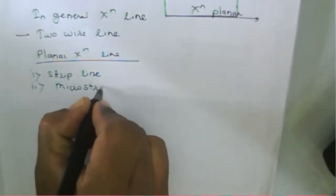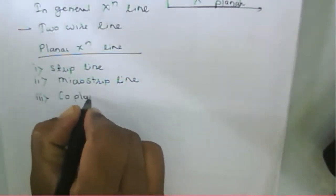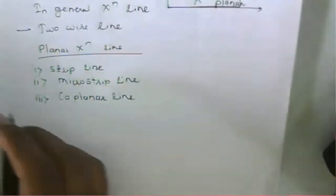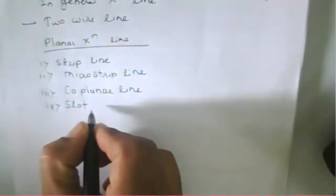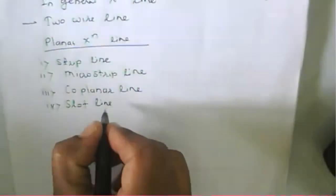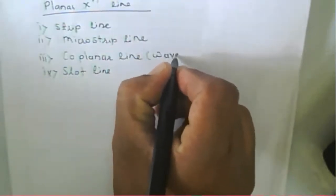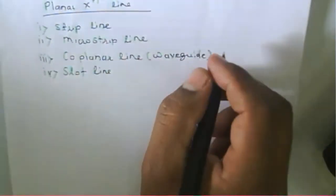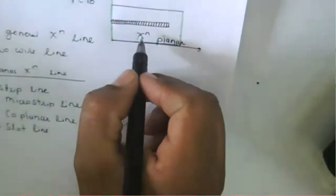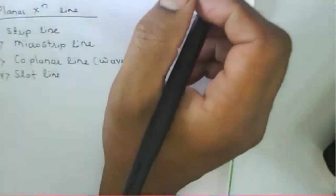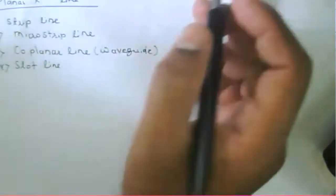The various types of planar transmission line structures we can design include: a strip line, a microstrip line, a co-planar line (also called co-planar waveguide), and a slot line. Whatever conducting structures we design — all are present in a particular plane — that's why they are called planar transmission lines.